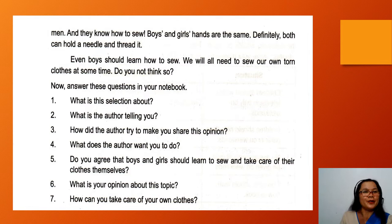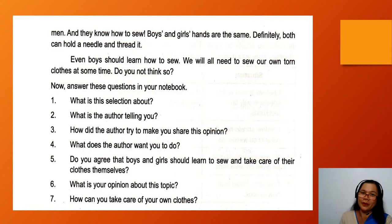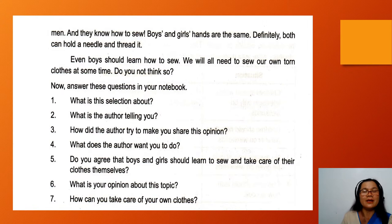For number four, what does the author want you to do? The author wants us to agree with his opinion. Do you agree? For question number five, do you agree that boys and girls should learn to sew and take care of their clothes by themselves? For questions 5, 6, and 7, write the answers in your notebook.